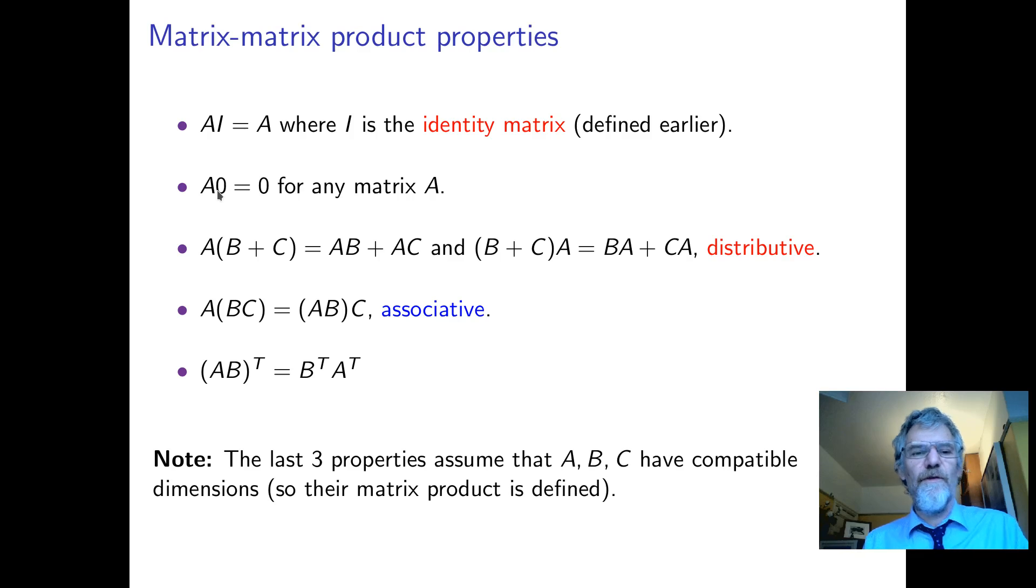The zero matrix, or more specifically, any zero matrix that's compatible, if you multiply it by A, gives you another zero matrix. The shape of the zero matrix is determined by the rule that I said.